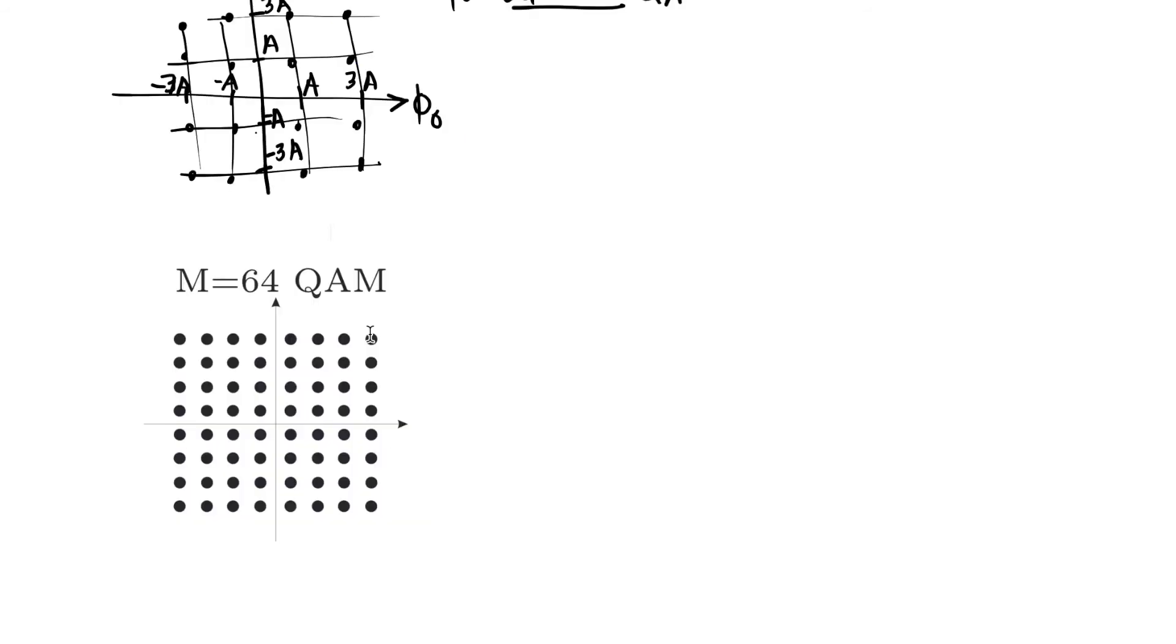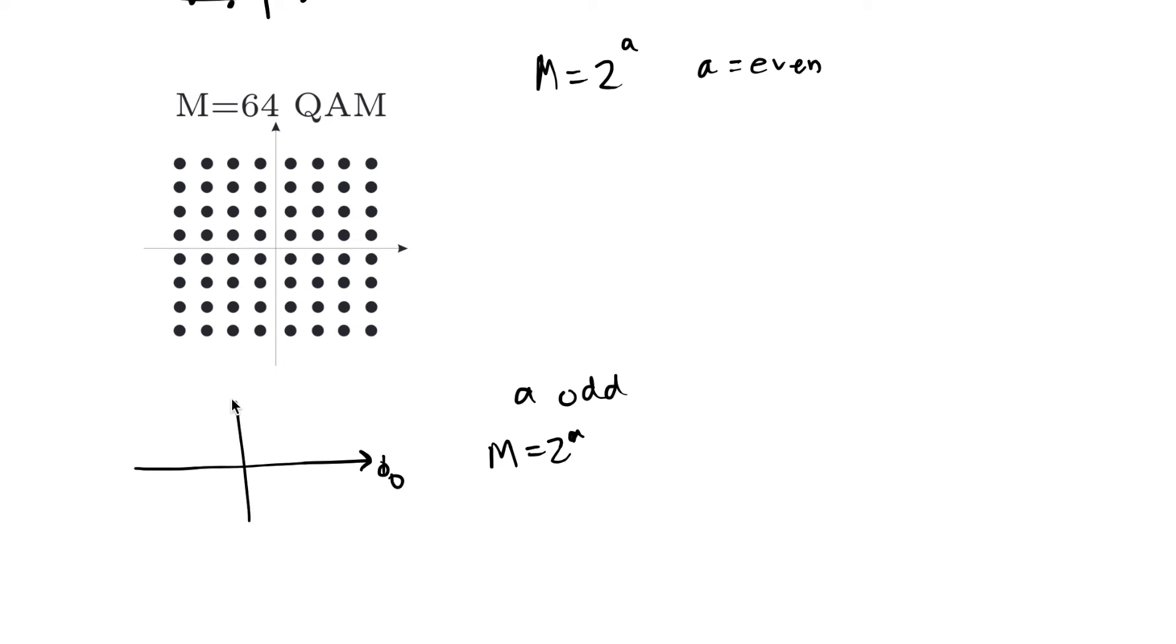I can have any value of QAM with m equal to 2 to some even power, where a is an even number, and I would be able to put all of my symbol points on a grid. If I had m equals 2 to the a where a is odd, I could still have some kind of pattern. I might have a rectangle. Here would be m equals eight rectangular PAM, and this would be eight rectangular QAM.